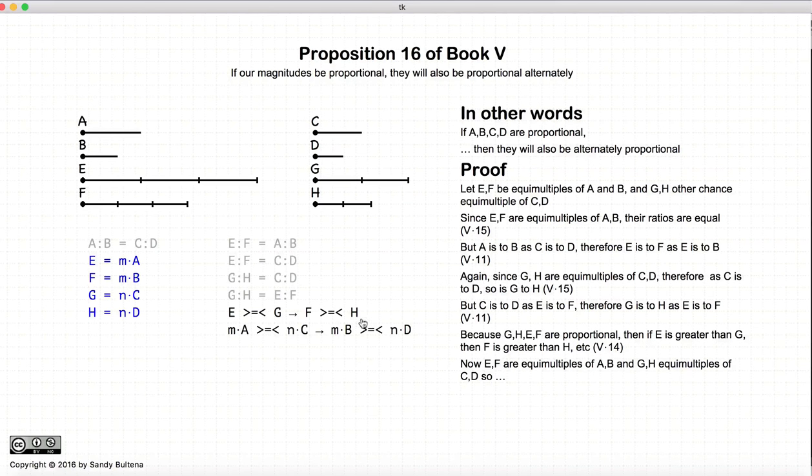This formula here should look a little familiar to you. But if not, it is from definition 5 of what it means for two ratios to be equal. If this equation holds for all M and N for the ratios A to C and B to D, if this holds true for all M and N, then the ratio A to C is equal to B to D. That is the definition. It comes from definition 5.